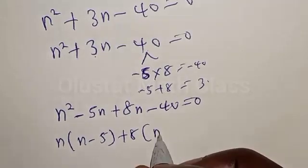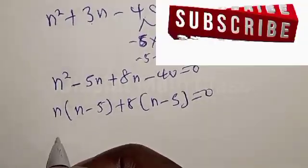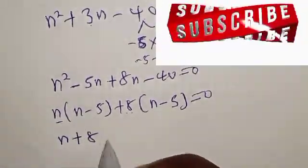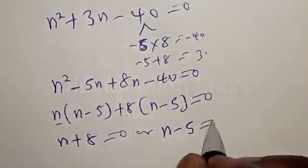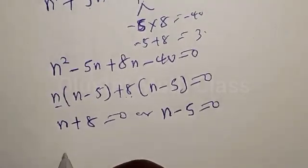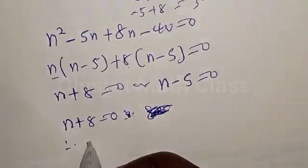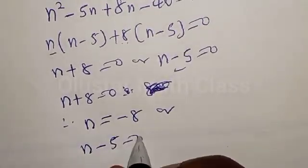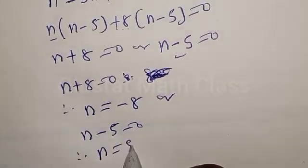Factorizing, we get n(n minus 5) plus 8(n minus 5) equals 0, giving (n plus 8)(n minus 5) equals 0. Therefore we have two cases: n plus 8 equals 0, or n minus 5 equals 0. Therefore, n equals minus 8, or n equals 5.